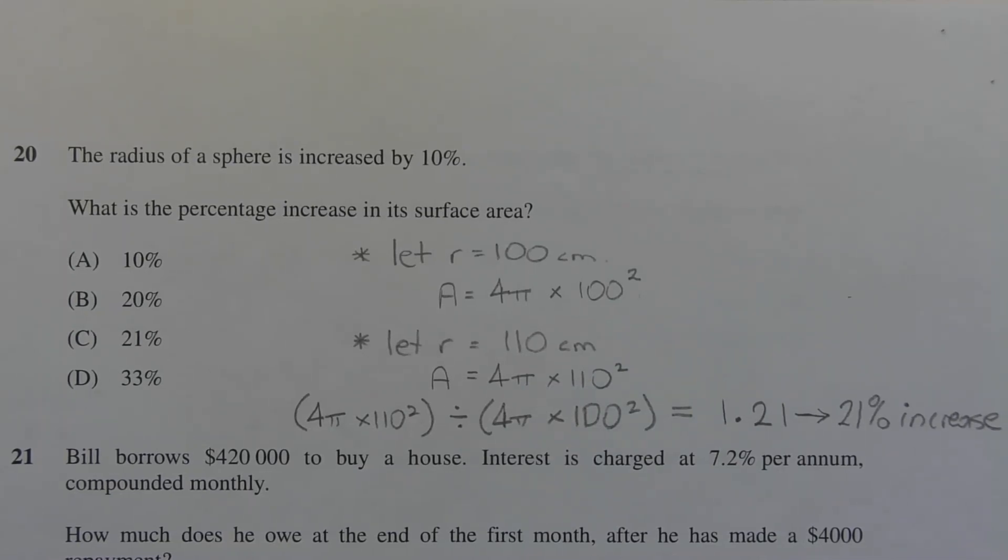Let's choose a convenient value for r. Since we're not given a particular radius to start off with, let's choose r equals 100 cm because increasing that by 10% is relatively easy to do. So let r equal 100 cm.